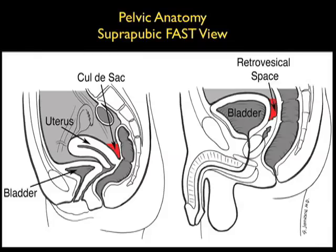Here's an illustration showing the anatomy we'll need to know to perform the suprapubic view of the trauma FAST exam. We see the pattern of fluid flow in a female to the left and a male to the right. In the female pelvis, fluid will preferentially develop in the pelvic cul-de-sac located behind the uterus. Small amounts of fluid will only be located in the pelvic cul-de-sac, but as the amount of fluid enlarges it will layer out on top of the uterus and on top of the dome of the bladder.